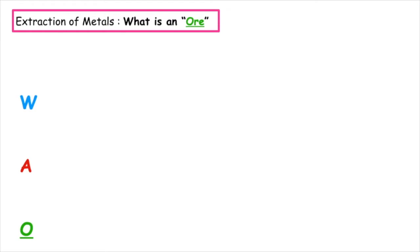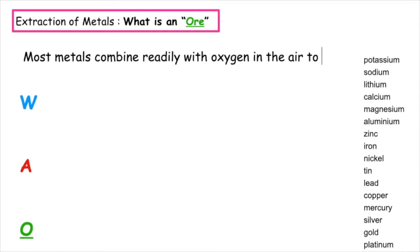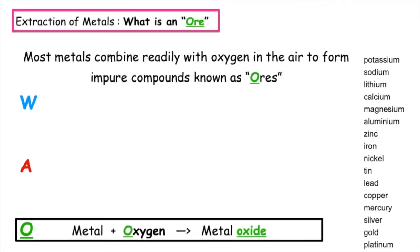So what is an ore? Most metals combine readily with oxygen in the air to form impure compounds known as ores.